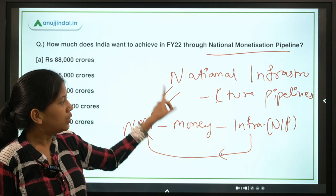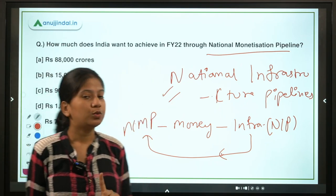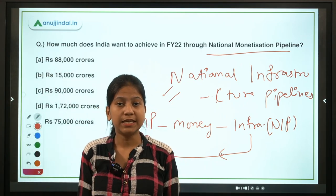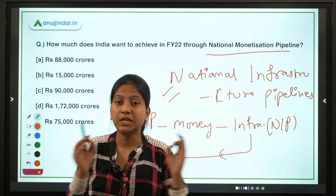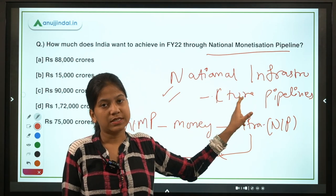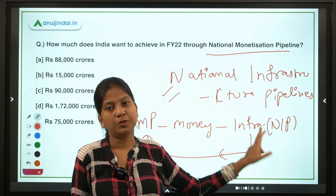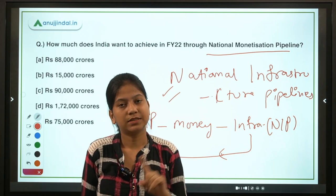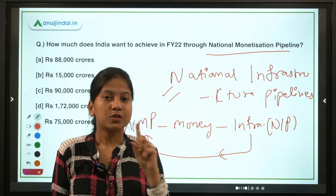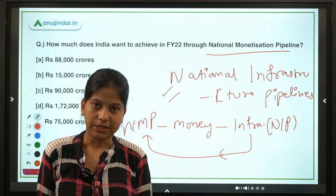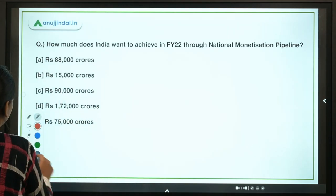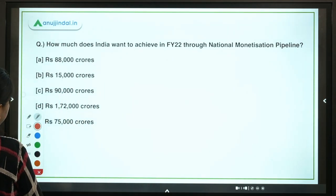I'm asking a simple question for you: what is the total corpus of the National Infrastructure Pipeline? Please answer in the comment section.